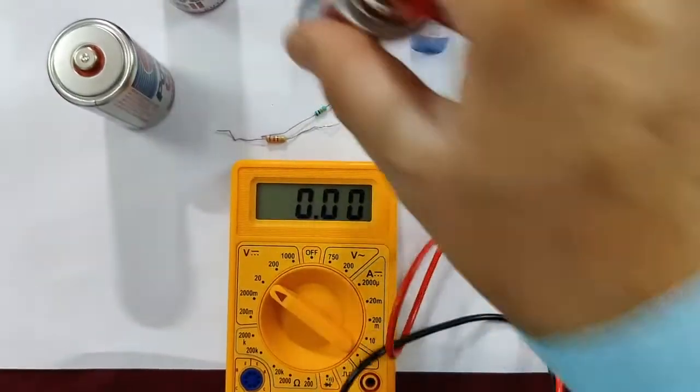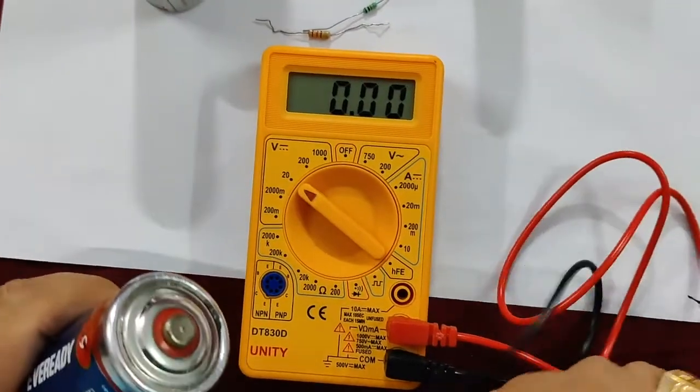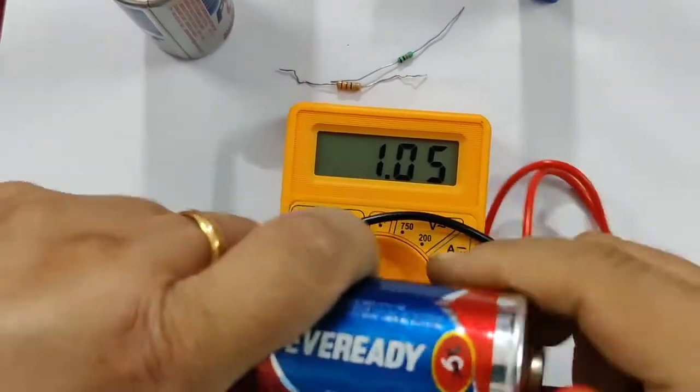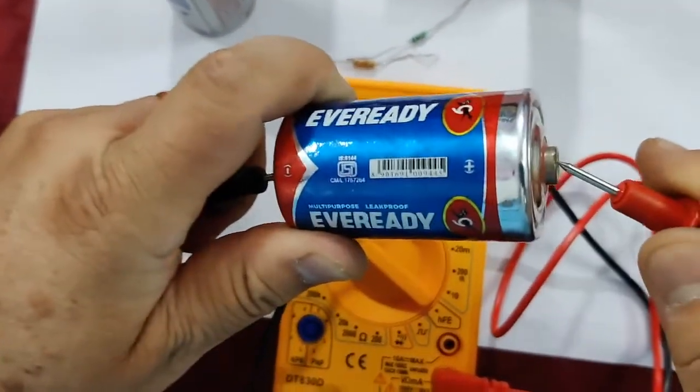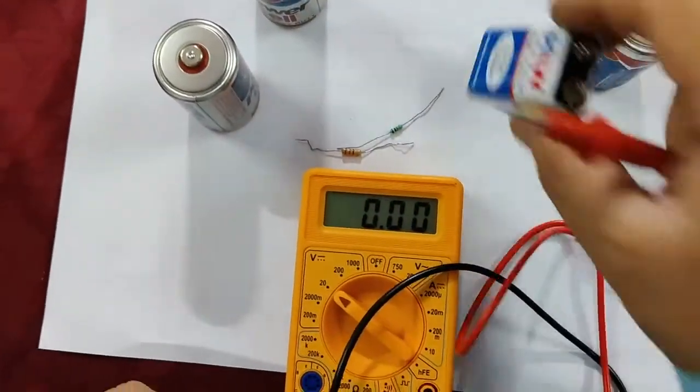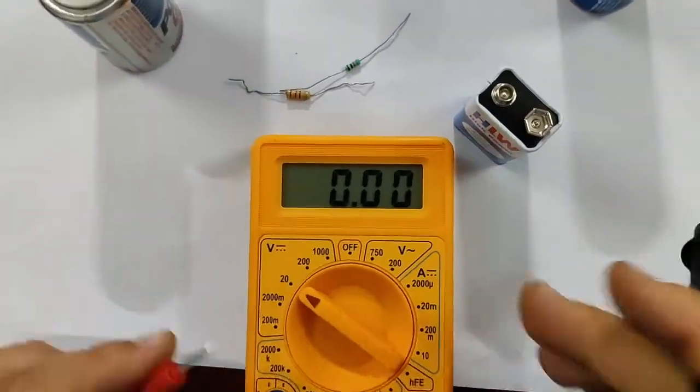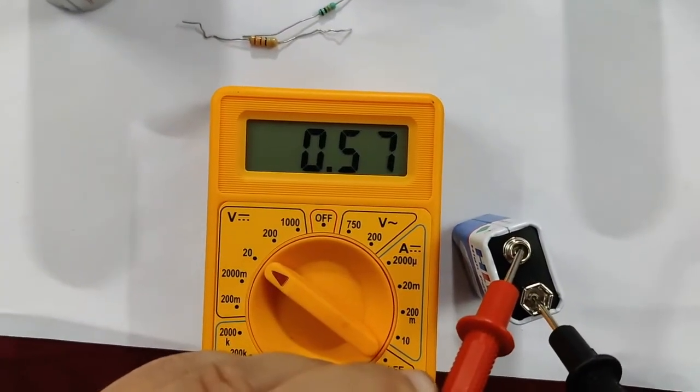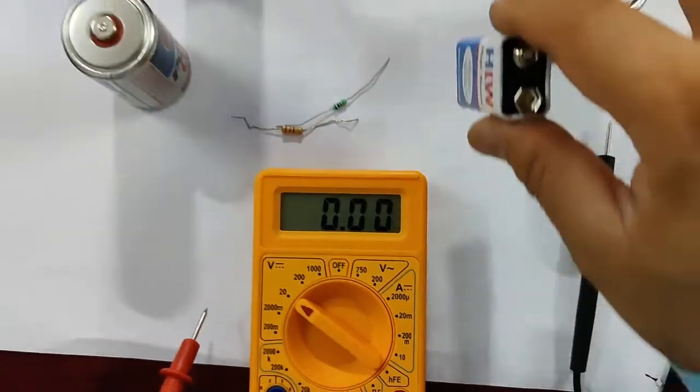Similarly, you will check the other battery. 1.06. You will touch the terminals and see how much voltage. 1.05. In this way, this is a PP3 battery. You can check it. Touch positive and negative terminals. How much? 1.57 volts.